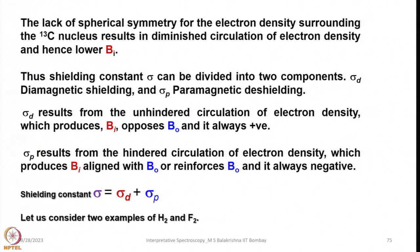The lack of spherical symmetry for the electron density surrounding the 13C nucleus results in diminished circulation of electron density and hence a lower B_i. If spherical symmetry is not present, the induced magnetic field has a small value and as a result the shielding effect is minimum. The lack of spherical symmetry for the electron density surrounding the 13C nucleus results in diminished circulation of electron density and hence a lower B_i value.